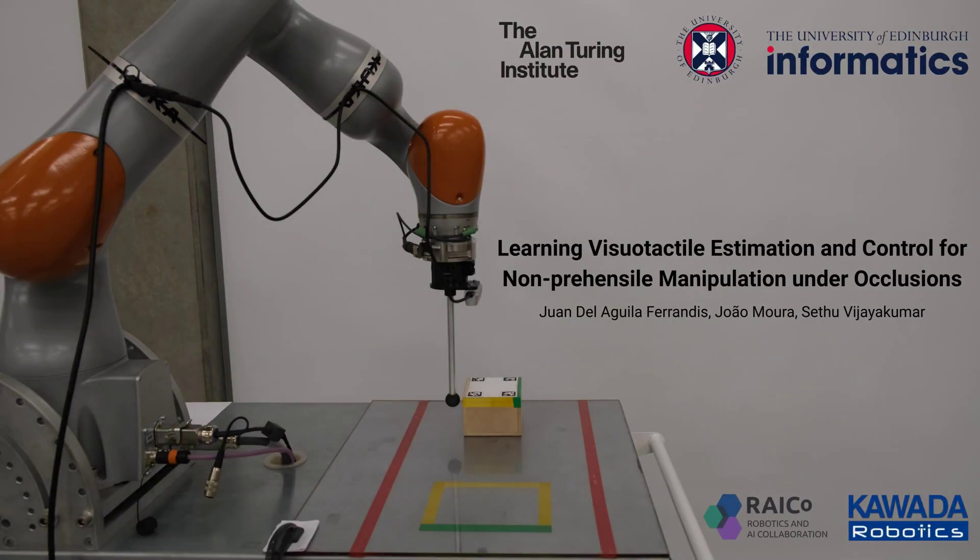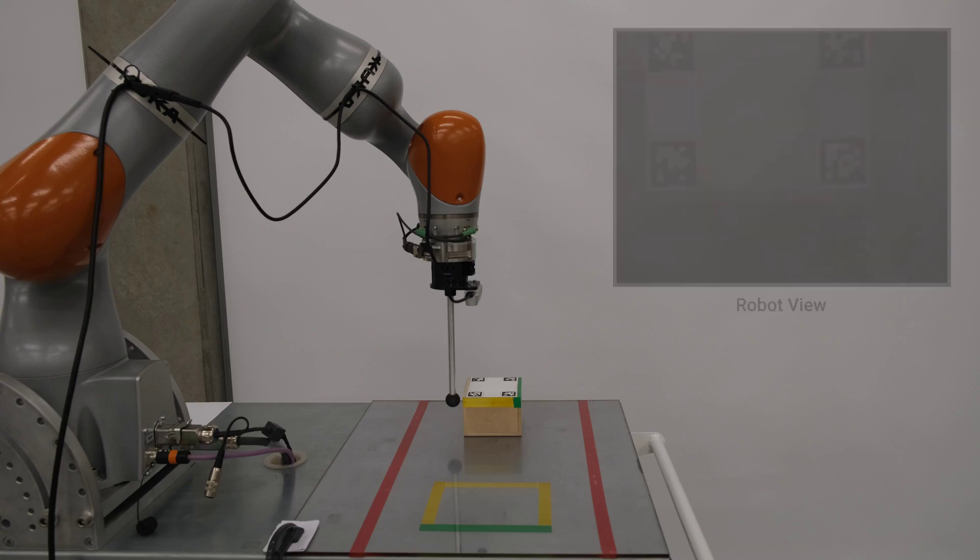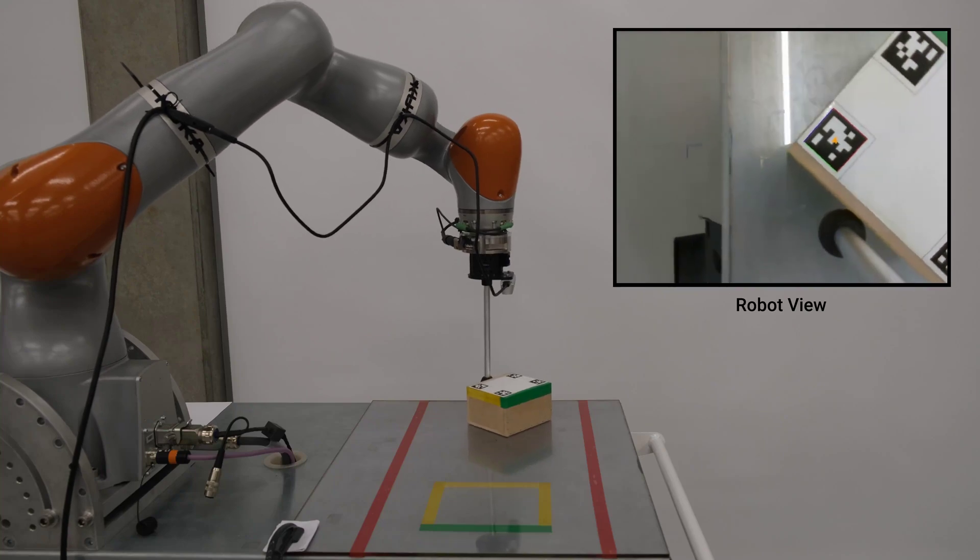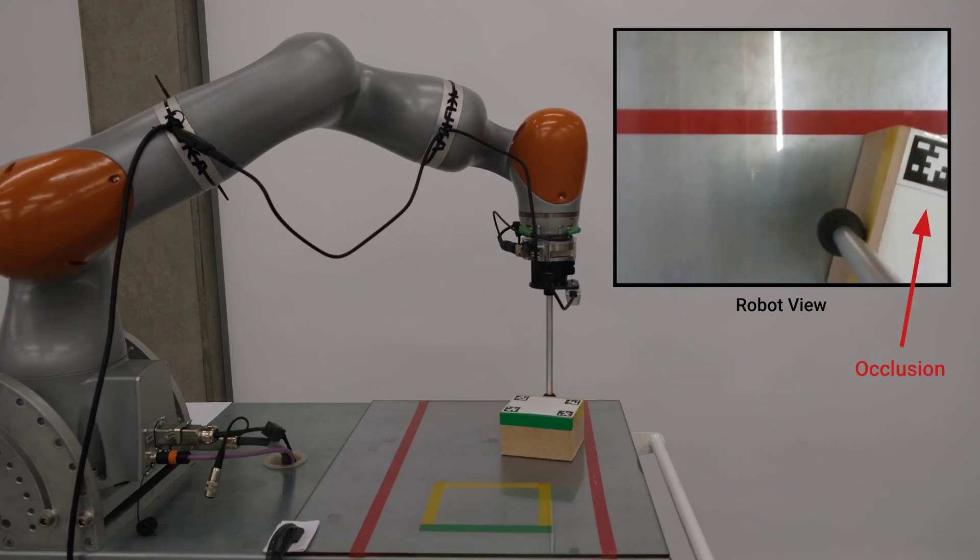In this video, we present our work on learning visual-tactile estimation and control for non-prehensile manipulation under occlusions. Previous works addressing closed-loop control for non-prehensile manipulation rely on complex external perception setups that guarantee continuous tracking of the manipulated object.